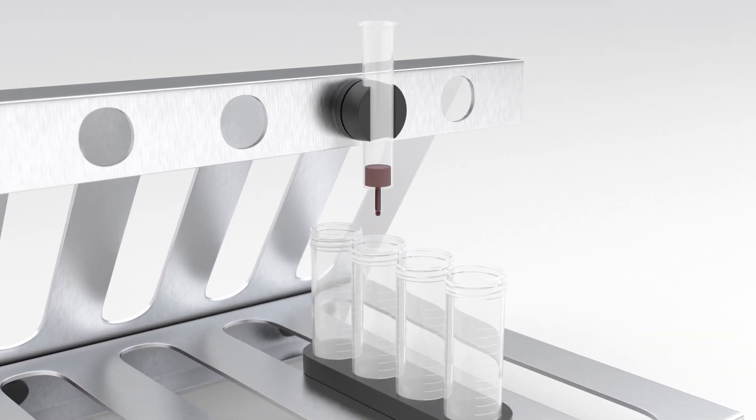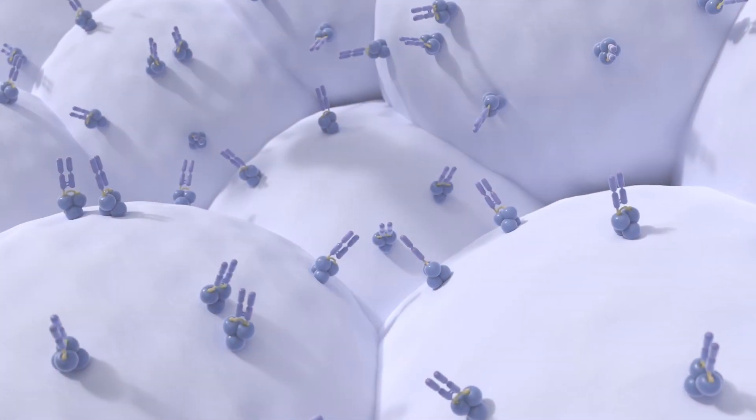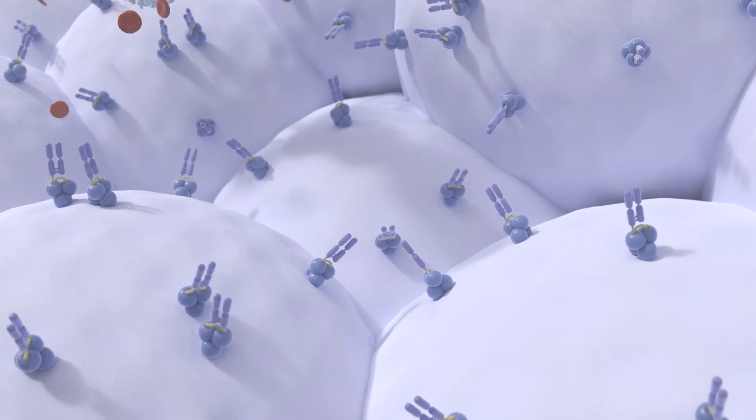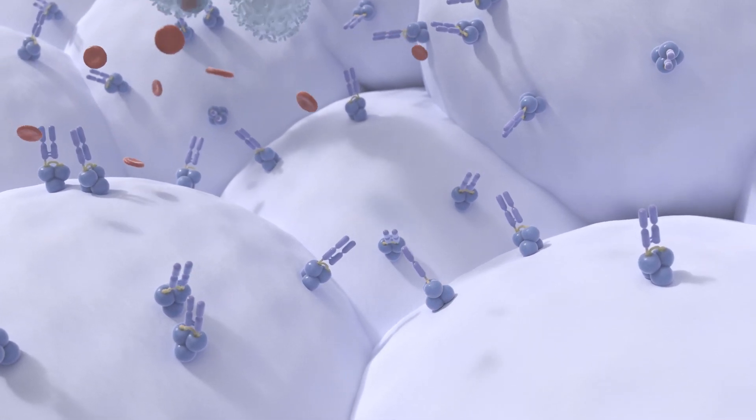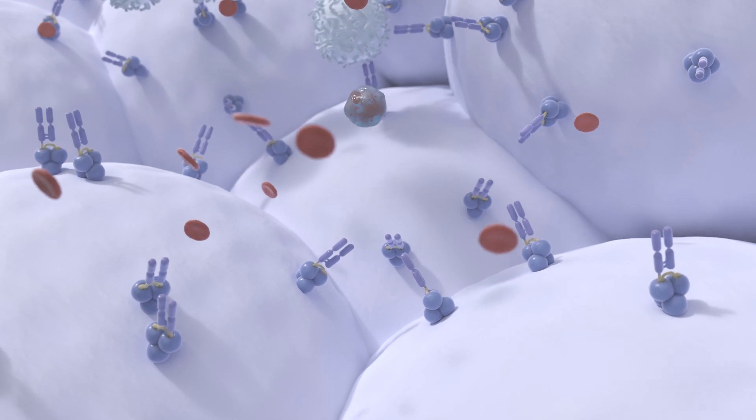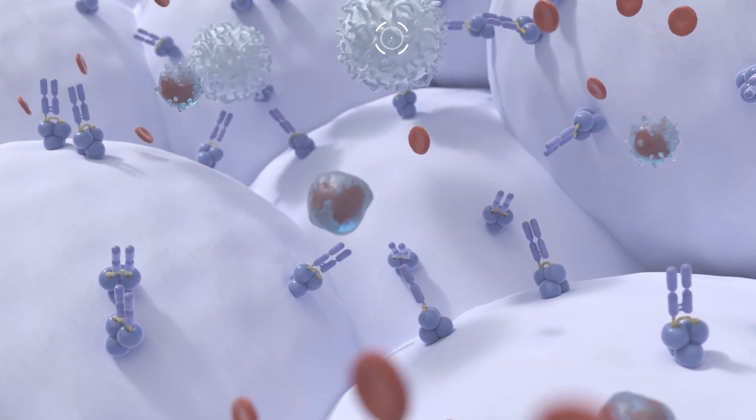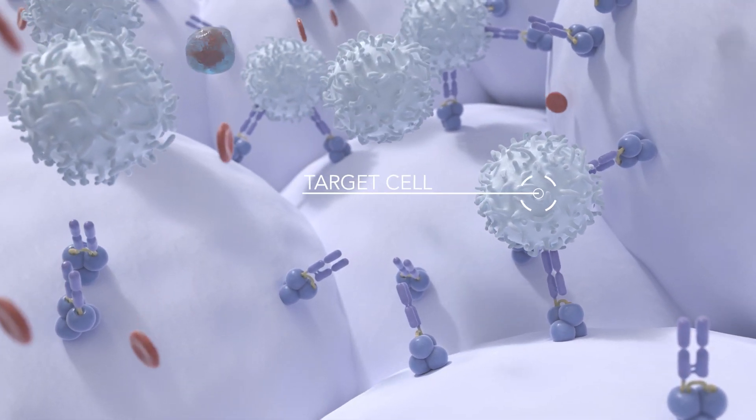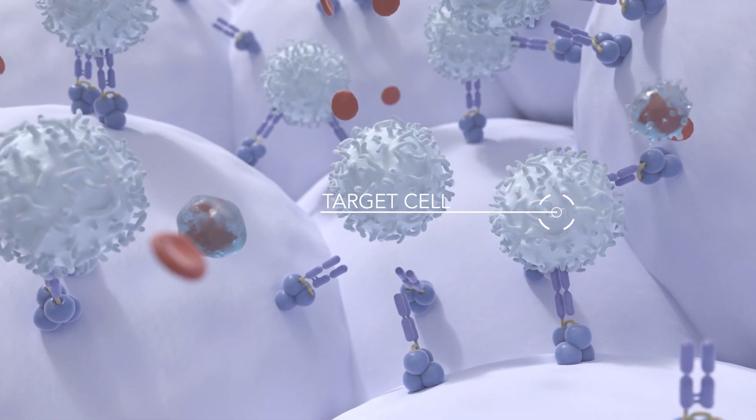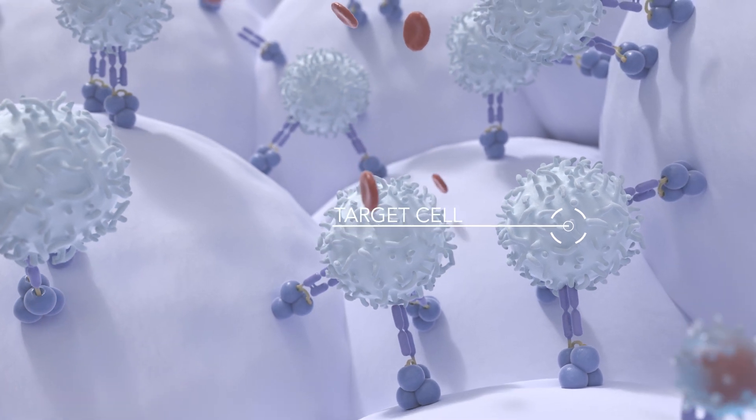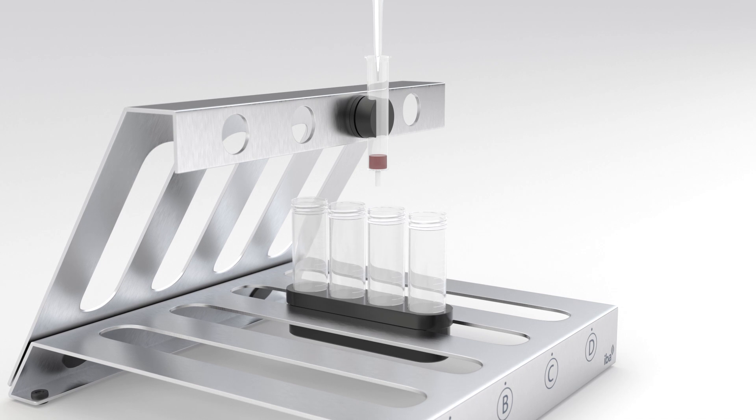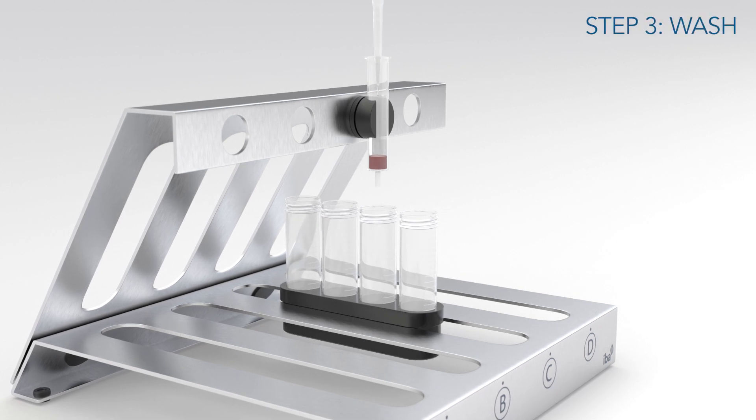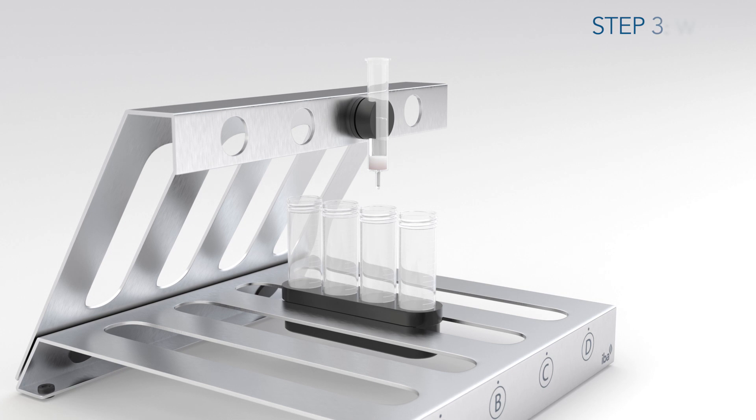When a single-cell suspension is passed through the column, target cells adhere to the affinity matrix based on the exclusive binding of the fab strep to the target cell. Non-target cells are washed away efficiently.